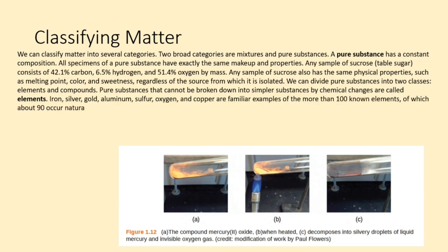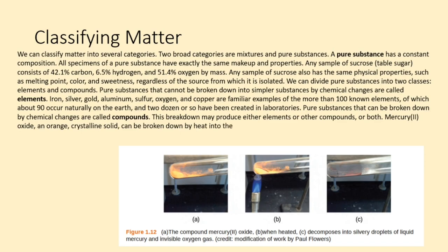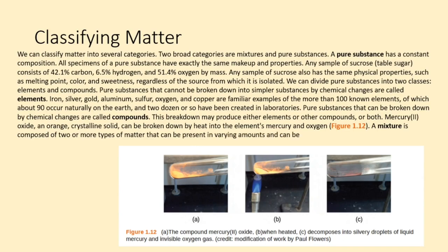Pure substances that cannot be broken down into simpler substances by chemical changes are called elements. Iron, silver, gold, aluminum, sulfur, oxygen, and copper are familiar examples of the more than 100 known elements, of which about 90 occur naturally on the earth, and two dozen or so have been created in laboratories. Pure substances that can be broken down by chemical changes are called compounds. This breakdown may produce either elements or other compounds, or both. Mercury oxide, an orange crystalline solid, can be broken down by heat into the elements mercury and oxygen, figure 1.12.